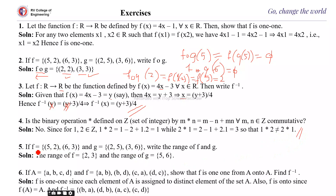Next: if f = {(5,2),(6,3)} and g = {(2,5),(3,6)}, write the range of f and g. The domain of f is {5,6} and the range is {2,3}. The range of f is {2,3} and the range of g is {5,6}.